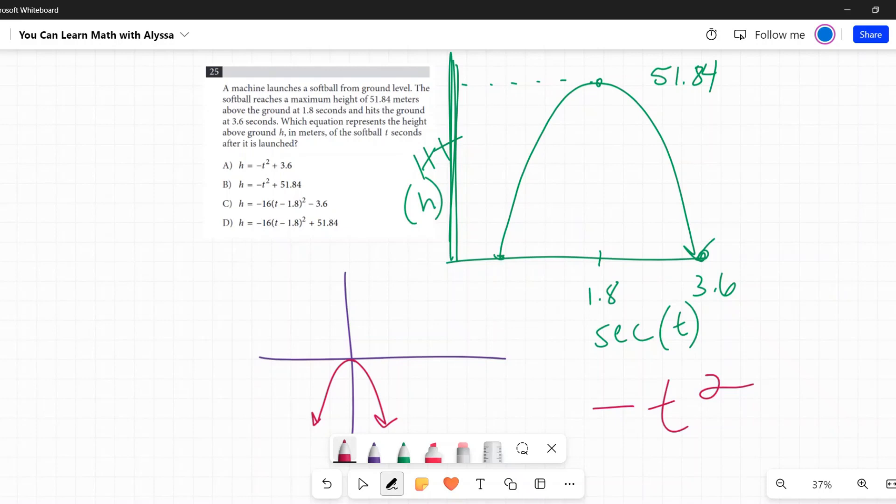I don't know that fact right off, so I'm going to ignore that. I'm just going to focus on that vertex. It starts at zero zero and it moves to the right 1.8 and it moves up 51.84.